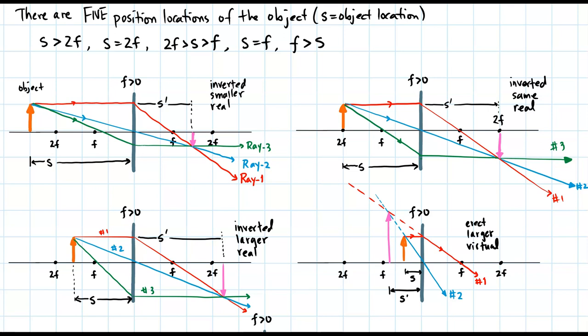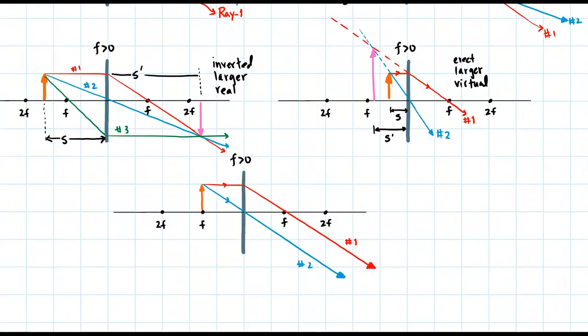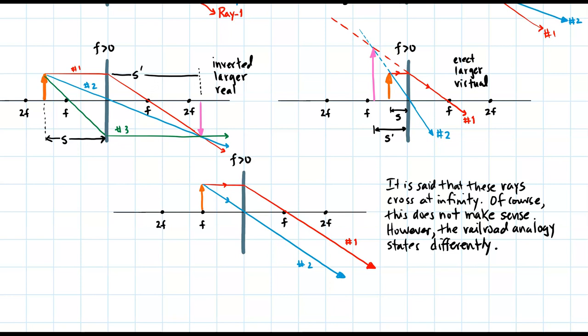When S equals F, the object is located at the focal point. Drawing rays one and two shows that the two rays are parallel and never cross. It is said that these rays cross at infinity, which of course does not literally make sense. However, the railroad analogy illustrates how parallel lines seem to converge in the distance — so when the object is at the focal point, the image is formed at infinity.